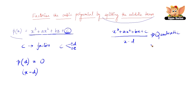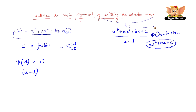The result will be of the form ax squared plus bx plus c. Now the splitting the middle term concept comes into play. This is a quadratic equation which can be factorized by splitting the middle term, and here we can split the middle term and further find two factors. That is how we factorize the cubic polynomial by splitting the middle term.